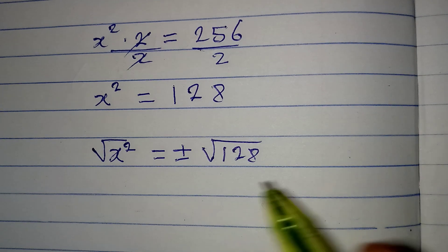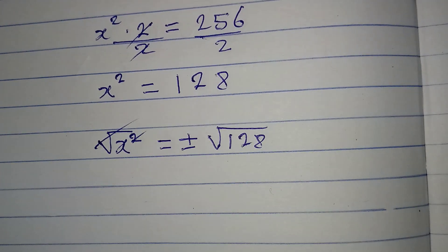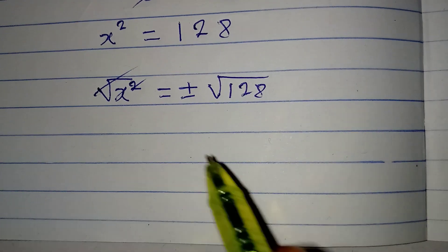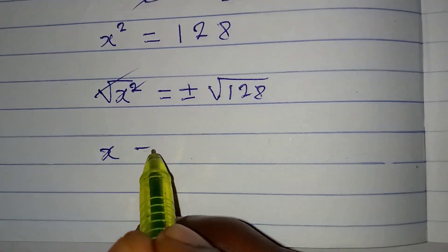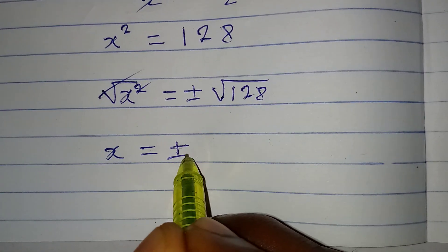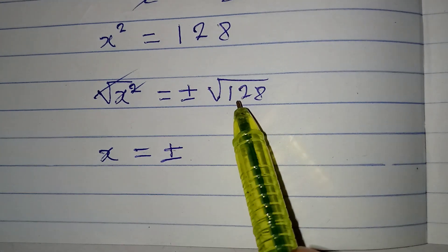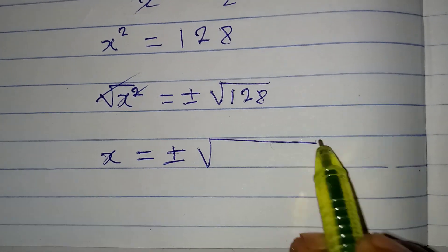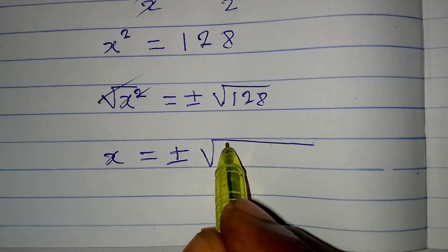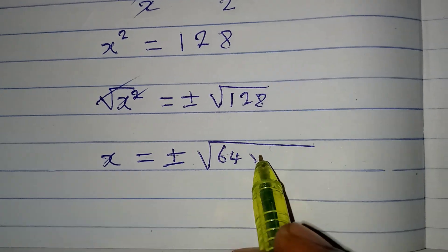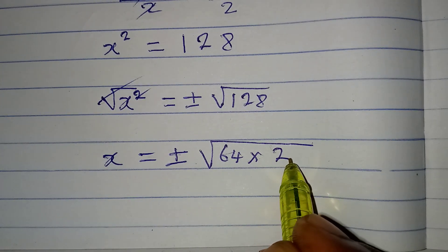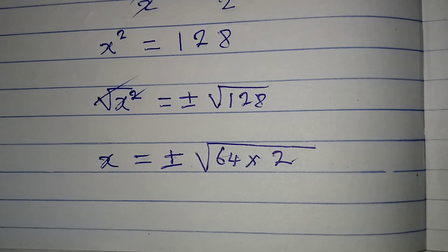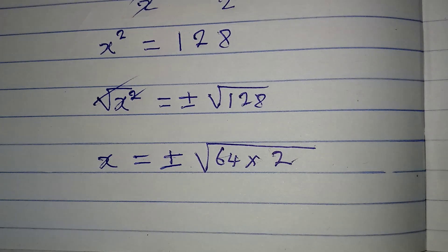This and this can now cancel, so we have x equal to positive or negative square root of 128. We can simplify square root of 128 as the square root of 64 multiplied by 2. What I have done is to bring out the highest perfect square in 128, which is 64.